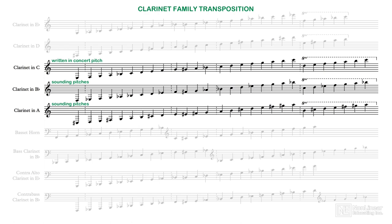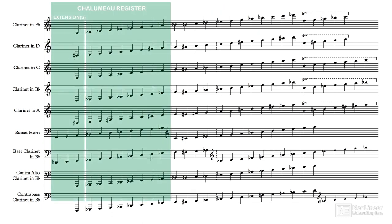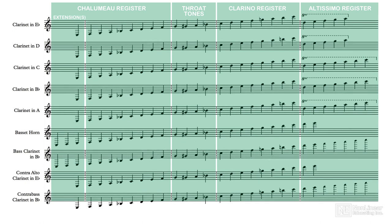But for now, what the orchestrator needs to know is that every clarinet model has virtually the same fingering and registers. No matter what size or transposition, a clarinet family member will have a low chalumeau register, throat tones, a higher clarino register, and then an altissimo range. And these registers will always be scored across the same pitches on a treble staff, with one occasional exception, which I'll mention when we get to the bass clarinet.